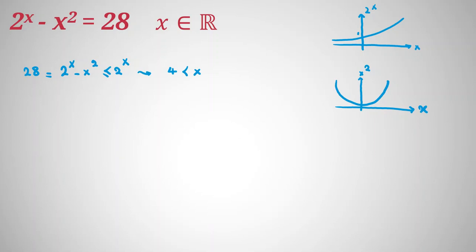Let's try to find at least one answer. If we select negative numbers — for example, checking x equals 0, the left side will be 1. Impossible. If we select x equals 1, left-hand side will be 1. Not good. If we select negative 1, left-hand side will be one-half minus 1, which is not an integer. For negative numbers, the left-hand side is not an integer, so let's check positive numbers.